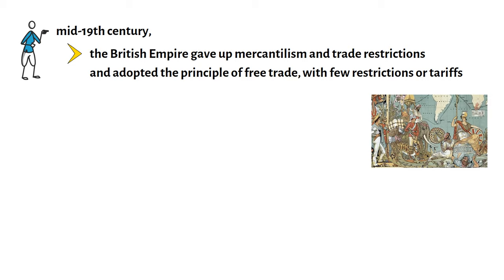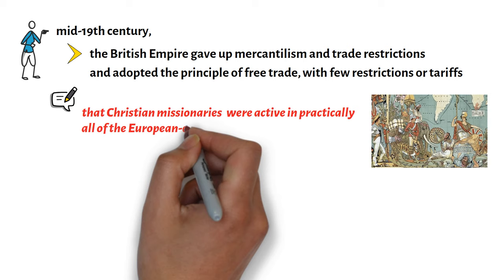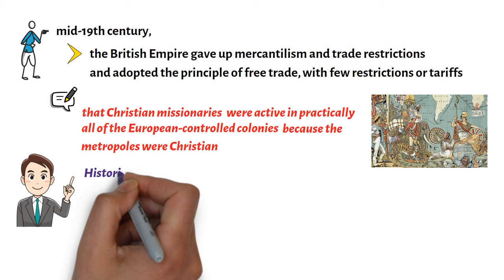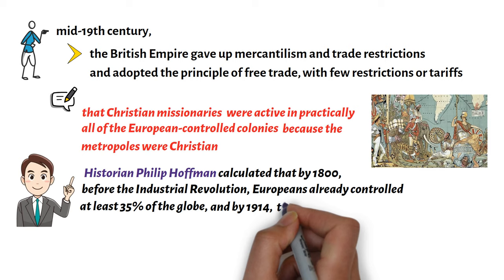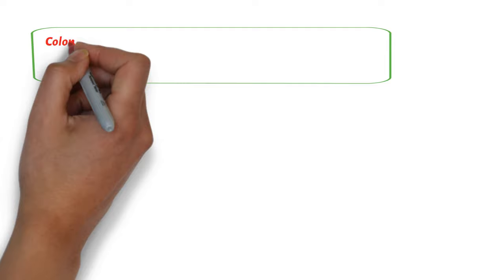It is interesting to note that Christian missionaries were active in practically all of the European-controlled colonies because the metropoles were Christian. Historian Philip Hoffman calculated that by 1800, before the Industrial Revolution, Europeans already controlled at least 35% of the globe, and by 1914, they had gained control of 84% of the globe.